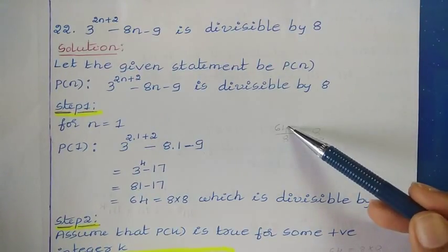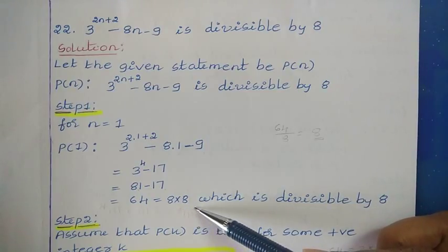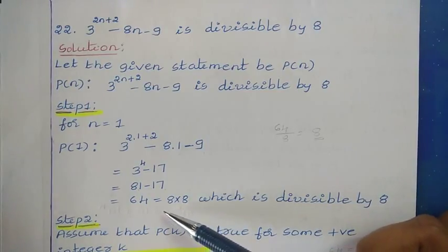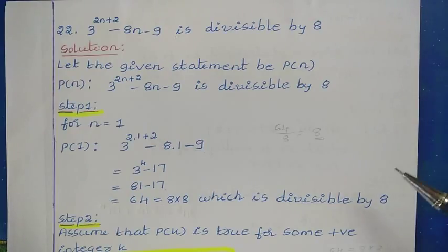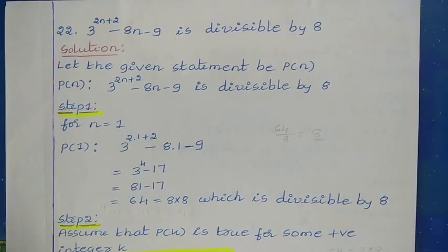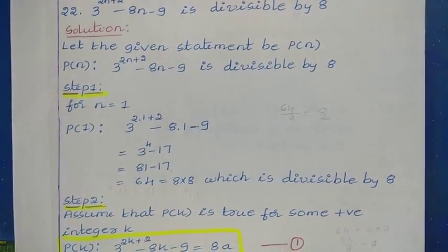We can write 64 in the form 8 into 8, so we can say that 64 is successfully divisible by 8. That means the statement is now true for n equals 1. Since it is true for n equals 1, we can proceed to the second step — making the assumption.